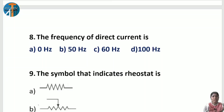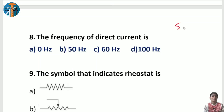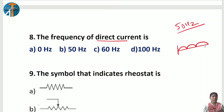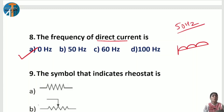Next question: the frequency of direct current is — options are 0 Hz, 50 Hz, 60 Hz, or 100 Hz. In your textbook under the generator topic, you learned about alternating current and direct current. For alternating current, the frequency is 50 Hz. But for direct current, it moves in the same direction and maintains the same strength — there is no change in direction, so its frequency is 0 Hz. Don't confuse DC with AC. DC = 0 Hz, AC = 50 Hz.